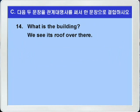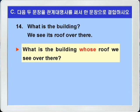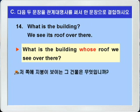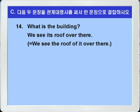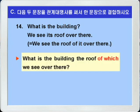마지막 14번입니다. What is the building? We see the roof over there. 그 건물은 무엇이냐? 저쪽에 그것의 지붕이 보인다. 두 문장에서 공통되는 것이 the building과 its죠. 따라서 the building이 선행사가 되고 its를 소유격 관계대명사 whose로 바꾸면 whose roof 이런 식이 되겠죠. What is the building whose roof we see over there? 또한 of which를 이용해서 What is the building the roof of which we see over there? 이런 식으로도 쓸 수 있습니다.